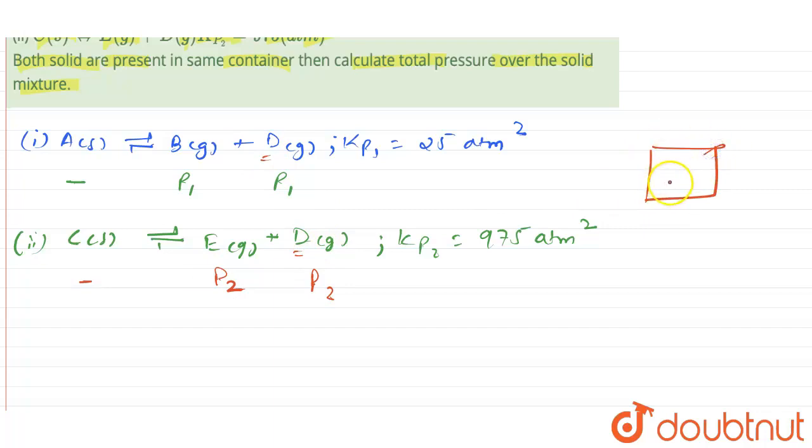Therefore, the partial pressure for D in this case and this case will become P2 plus P1, and here P1 plus P2.